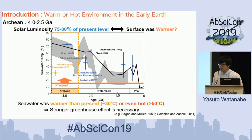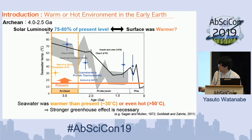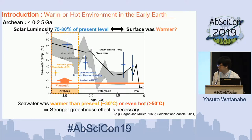In the early Earth, especially in the Archean from 4 billion years ago to 2.5 billion years ago, the solar luminosity was just around 80% relative to the present. This figure shows the reconstructed seawater temperature, which suggests that in the early Earth the surface temperature was warm or even a hot environment exceeding 50 degrees. So to achieve such a warmer or hot environment under the dimmer sun, greenhouse gases are considered to be necessary.